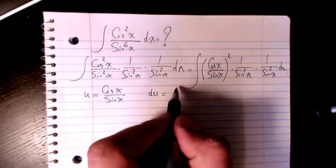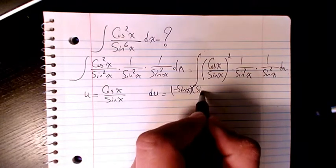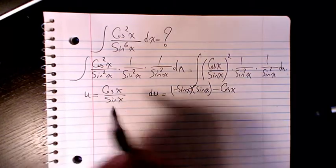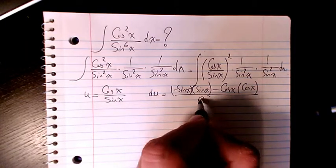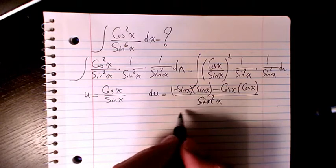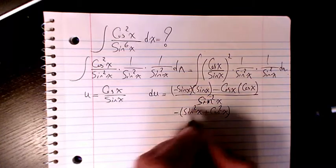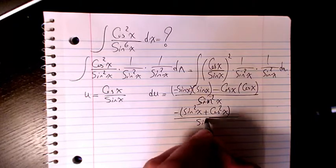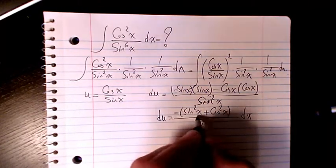Then du will be the derivative of cosine, which is negative sine, times the denominator sine, minus the derivative of the denominator cosine times the numerator, all divided by the denominator squared. So it's going to be negative sine squared x plus cosine squared x — because I factored out the two negatives — divided by sine squared x dx.